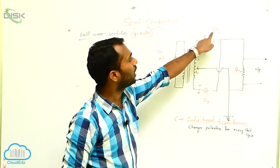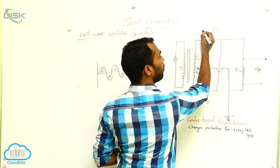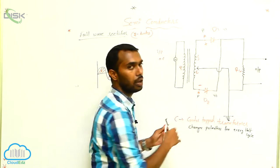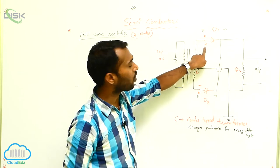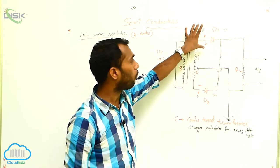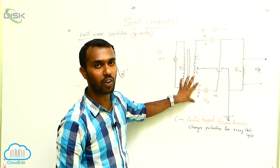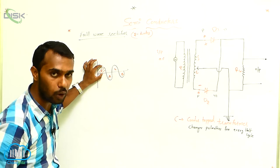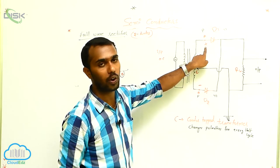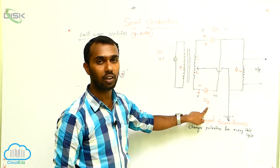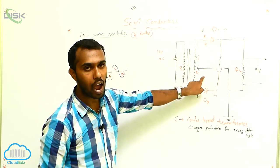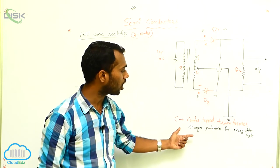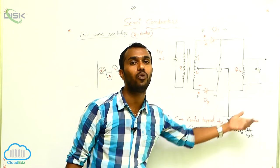Now tell me which diode is in forward bias. Diode D1 is in forward bias. Why? Because the P side is connected to the positive terminal — that is forward bias. Diode D2 is in reverse bias. So for the first positive half cycle, diode D1 is in forward bias and diode D2 is in reverse bias.